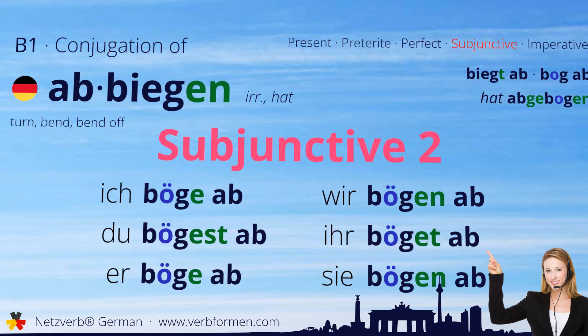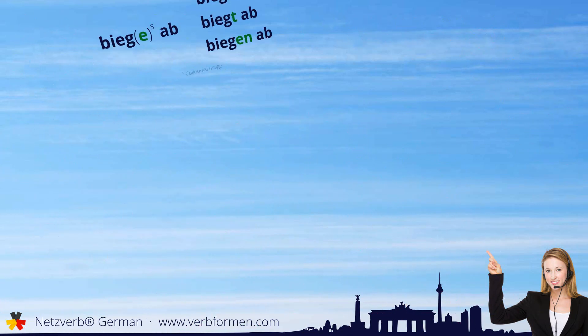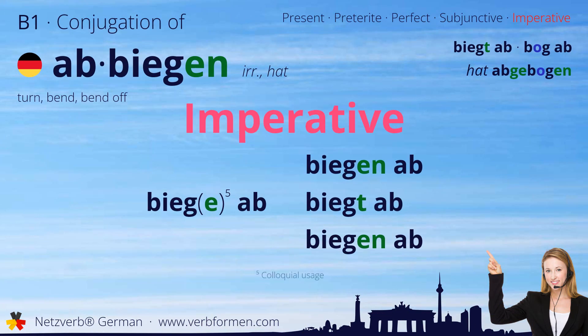And finally, we'll cover the imperative. Biege ab. Du biegen ab. Wir biegt ab. Ihr biegen ab.